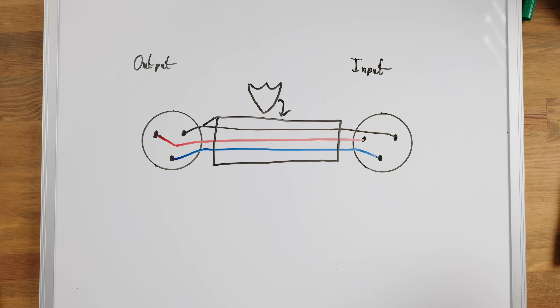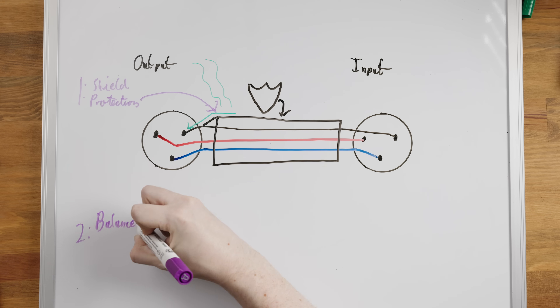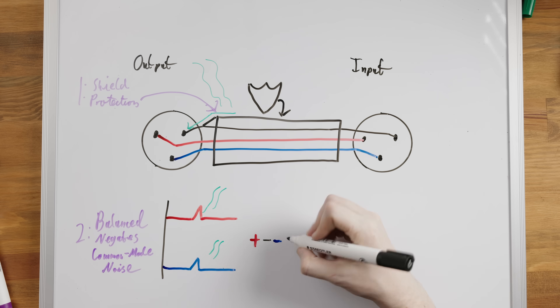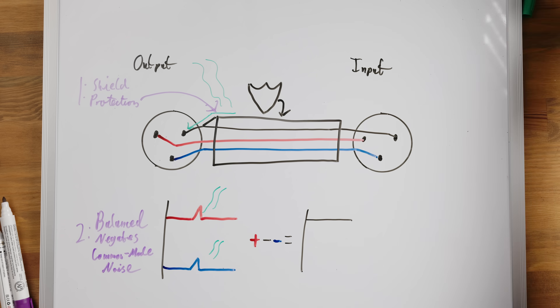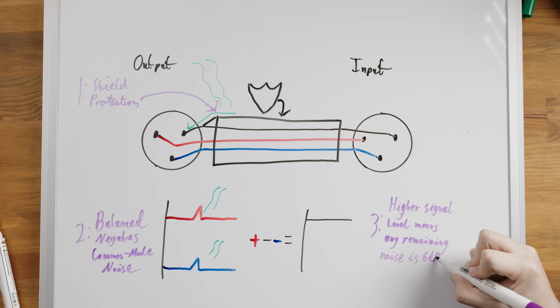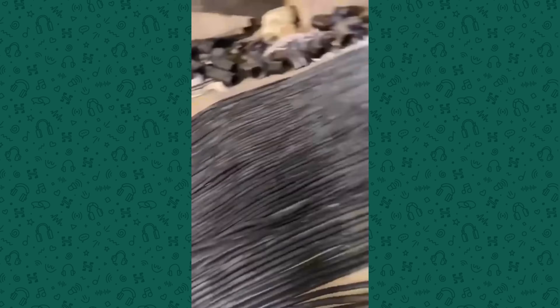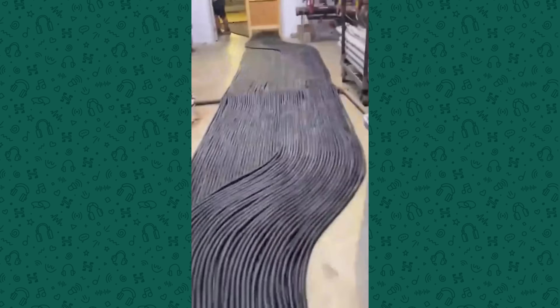Many XLR connections will also use a shield, so now you have protection from the shield, protection from the nature of it being balanced, and the extra 6dB of signal-to-noise ratio from the higher signal level itself — meaning XLR connections that are both balanced and differential can be used for even extremely long runs without worrying about noise pickup pretty much at all. So most XLR connections are both balanced and differential, but don't confuse the two.